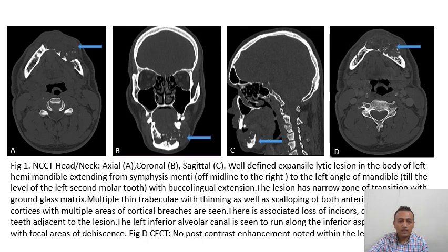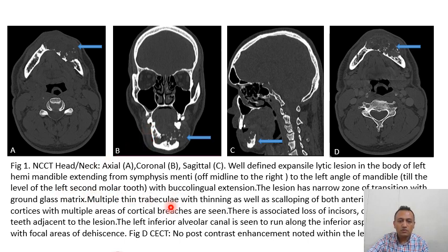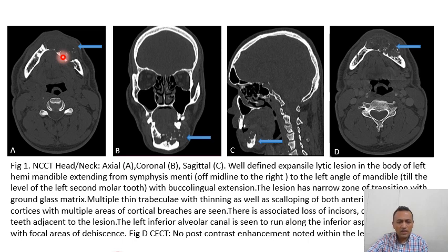On NCCT head and neck — axial, coronal and sagittal views — there is an expansile lytic lesion in the body of the left hemimandible extending from the symphysis menti to the left angle of the mandible at the level of the second molar tooth with buccolingual extension. The lesion has a narrow zone of transition with ground-glass matrix; multiple thin trabeculae with scalloping of both anterior and posterior cortices with multiple areas of cortical breaches. Loss of incisors, canine and premolar teeth adjacent to the lesion is noted. No post-contrast enhancement is seen on CECT.